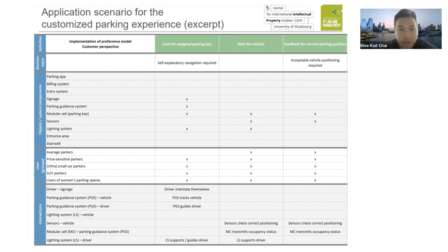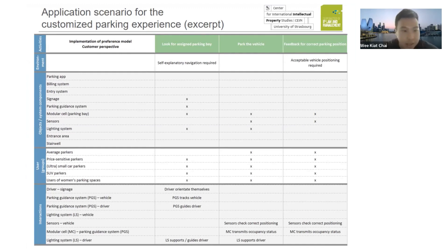'O' refers to objects — what kind of objects or tools are being used by the users. Here, we will need things like signage, a parking guidance system, modular cell, parking bay, and also the lighting system.